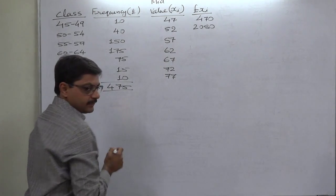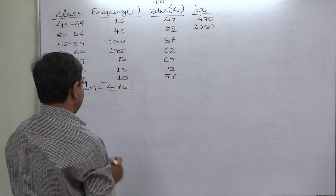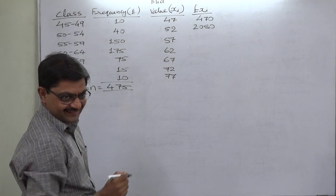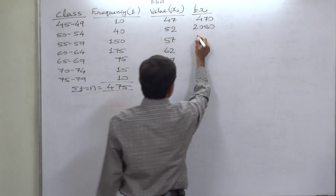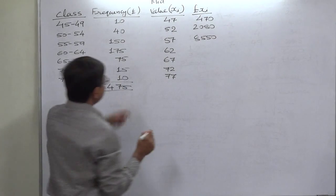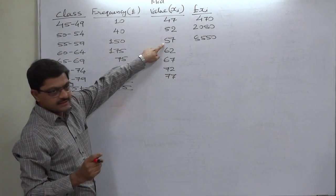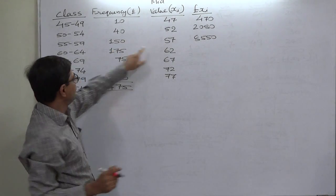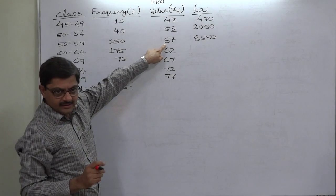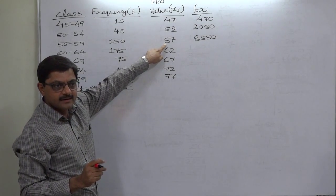57 multiplied by 150, 8550. You can multiply first 100 with 57, 5700, and then 50 with 57, that means 2850.